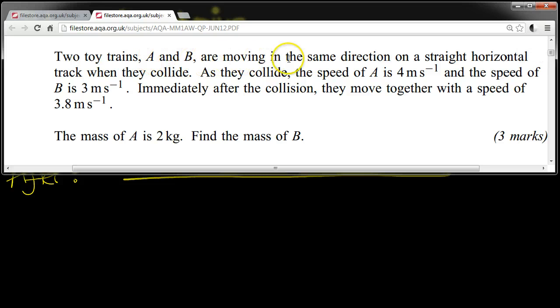Two toy trains, A and B, are moving in the same direction on a straight horizontal track when they collide. As they collide, the speed of A is 4 meters per second and the speed of B is 3 meters per second. Immediately after the collision, they move together with a speed of 3.8 meters per second. The mass of A is 2 kilograms. Find the mass of B.